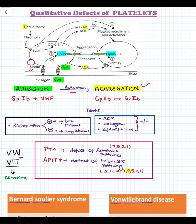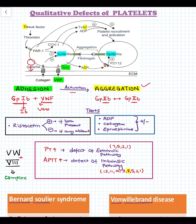For adhesion, we would require GP1B receptor on the platelet surface and Von Willebrand factor on the vessel. We can remember that easily: V is for vessel and one platelet is involved, so we can remember it as the 1B receptor. In cases of aggregation, two platelets are involved, so we can use the technique of 2B to remember this.